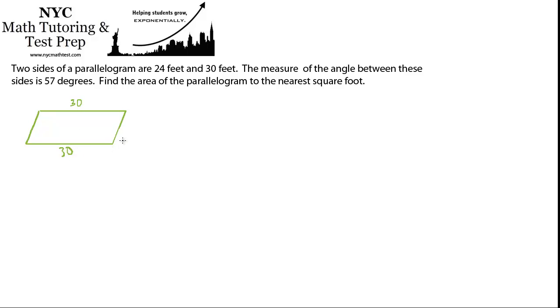So remember, a parallelogram has two pairs of parallel sides that are also equal, right? So 30 and 30, and they're parallel to each other. And then these sides are parallel to each other, and they are 24.